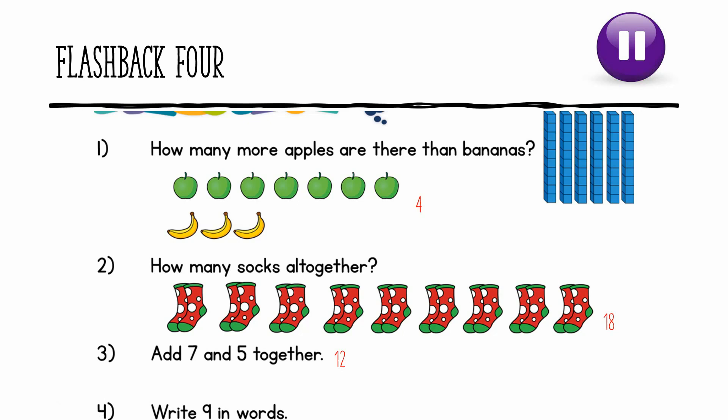Question 4. Write the word 9. I'm going to press it on my Fred fingers. N, I, N, E. So I need a 'kn', then I needed a split digraph 'i', which is the nice smile, and then I needed an N again: N, I, N, E. If you made a mistake with spelling the word nine, pause the video and have a go at writing it out 3 times so it gets locked into your head. If not, we shall carry on with the video.